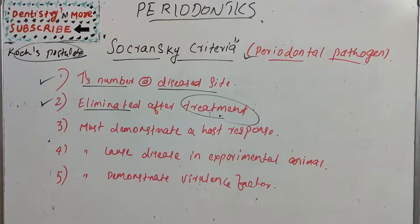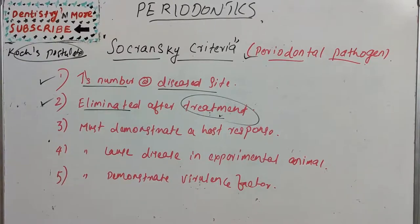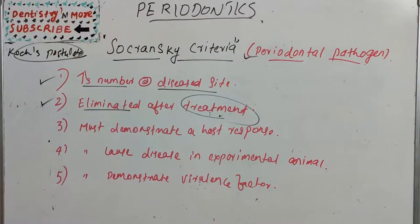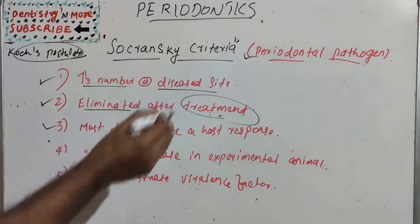The third criterion is that it should demonstrate a host response in the form of an alteration in the host's cellular or humoral immune response. When an antigen enters the body, the immune system tries to attack it. If a group of microorganisms can create a host immune response, we can say it is a periodontal pathogen.